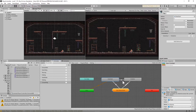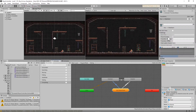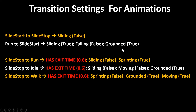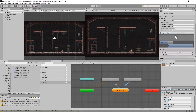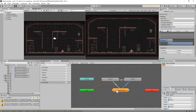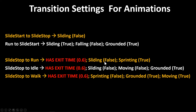You're going to need a transition from run to slide start because run is the only way you can begin sliding. For the slide transitions — slide start to slide stop, and then slide stop to run, slide stop to idle, and slide stop to walk — all of them have an exit time of 0.6, so make sure you set that in the inspector. The reason we have this exit time is because we want that stand-up motion to complete fully before the character stands up.